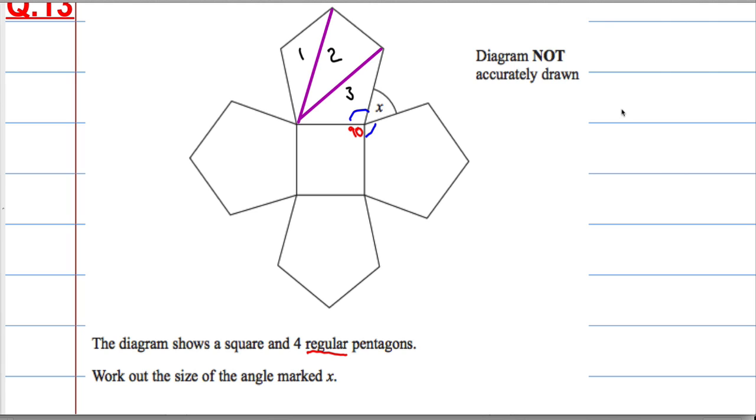Each triangle has 180 degrees in it, so the total number of degrees inside the pentagon will be 180 times 3. And 180 times 3 is 540 degrees in total inside the shape.